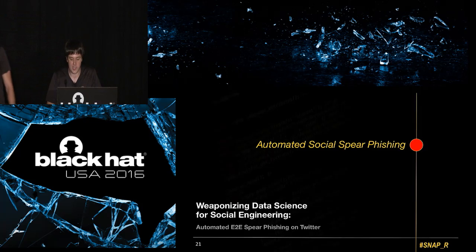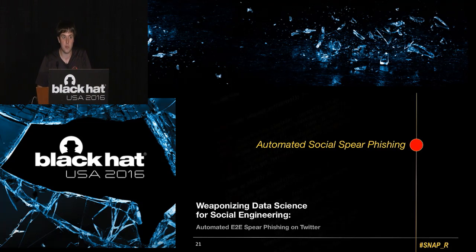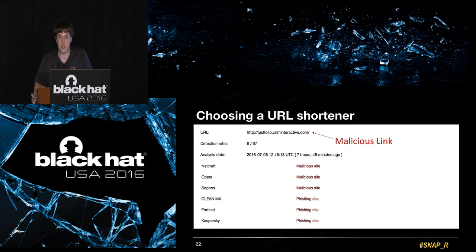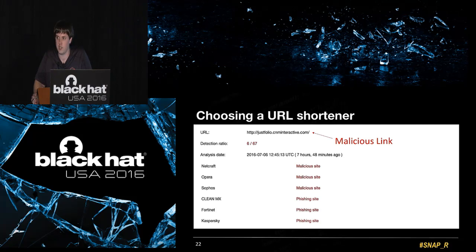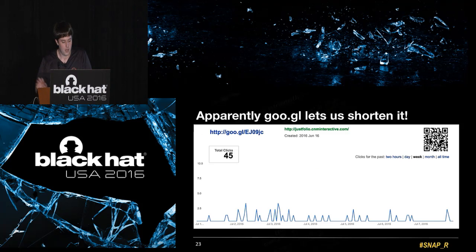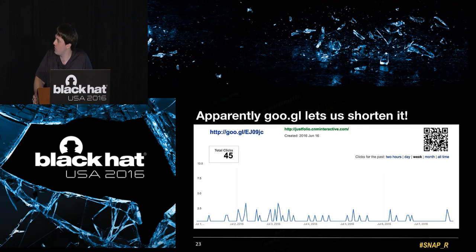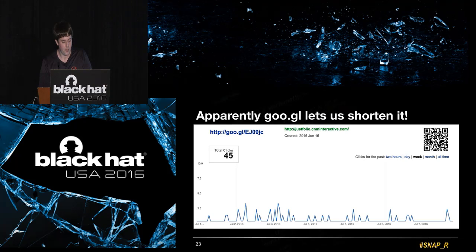Before we get into generating text, let's talk about the boilerplate around the tweets. The first problem we ran into is choosing a URL shortener to hide a payload. We found a malicious link — confirmed by multiple records on VirusTotal. We looked through many different URL shorteners and found goo.gl lets us shorten it along with several others. Interestingly, when we shortened it, people were already clicking on it, suggesting it was being used in the wild or for pen testing.